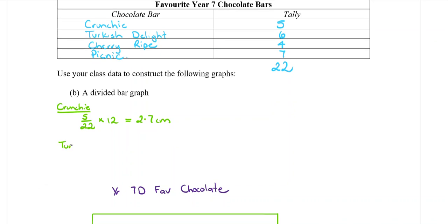Now we're going to do the next one, Turkish Delight. Make a fraction for the people that like Turkish Delight. Six out of 22 people like Turkish Delight and we're going to times that by 12 because we're going to do a 12 centimeter bar. So that number on the end is always the length of the bar that you're going to do. And to make your answers the same as the one in the answer booklets, we're going to use the number 12.